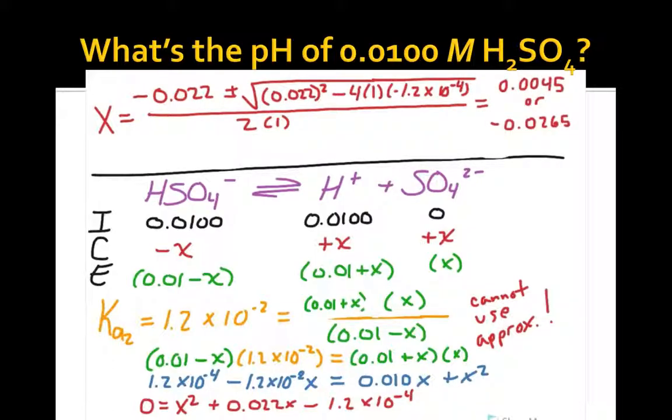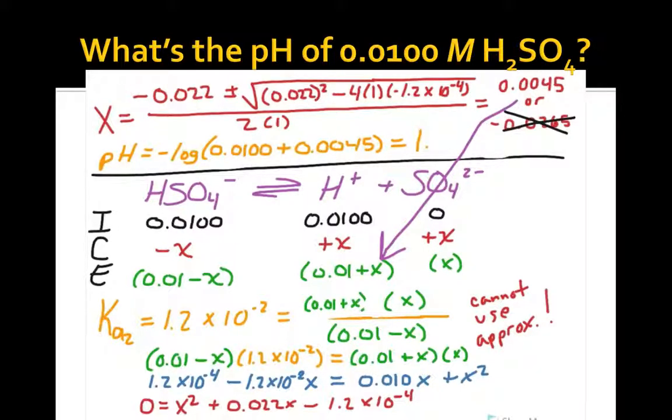We'll get two solutions for this expression, only one of which makes any sense in the context of this problem. The equilibrium concentration of hydrogen ions is therefore the sum of hydrogen ions produced from each of the two dissociation steps, 0.0100 molar from the first step and 0.0045 molar from the second step. The pH, then, is the negative log of 0.0145, which is 1.84.